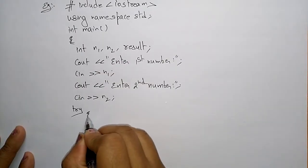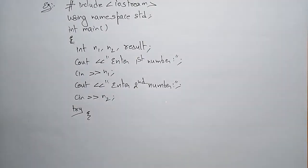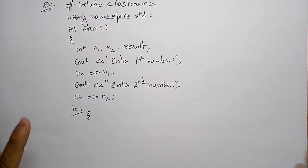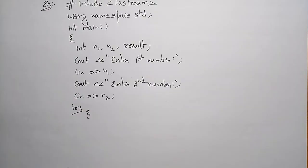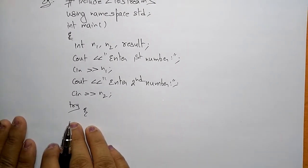Now I am writing the try block. Whatever values I enter — suppose if I enter values that cause a divide-by-zero or some other exception — instead of crashing the program, it executes normally by displaying some result, like zero. If you give correct input it displays the result; if you give an error condition it displays something like zero.